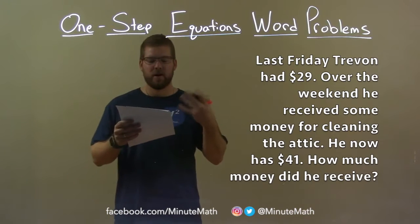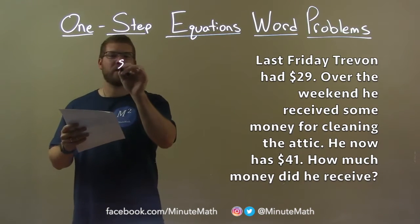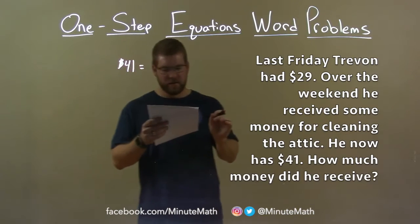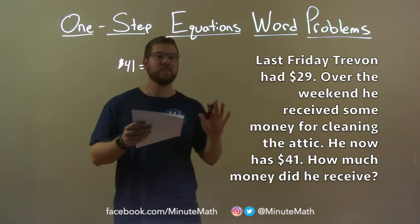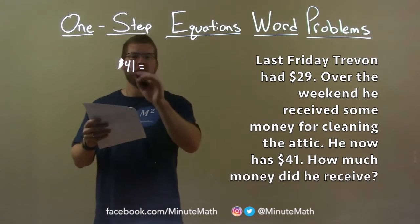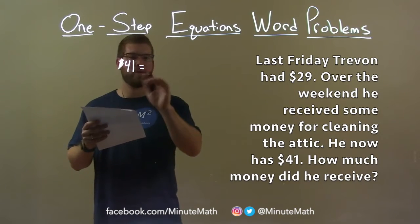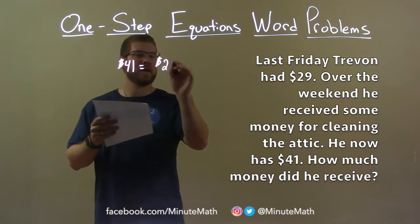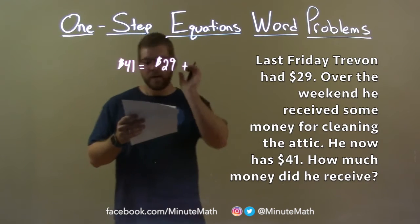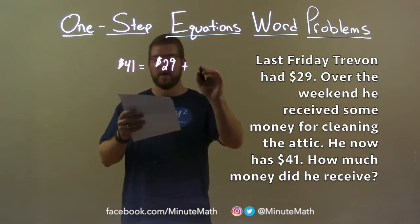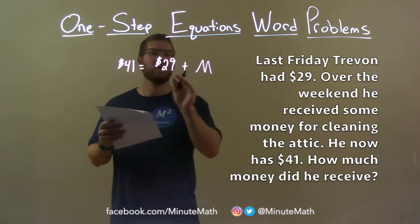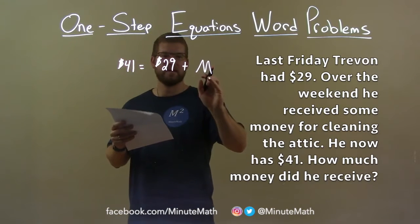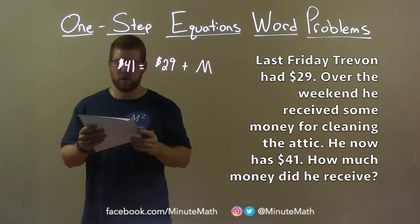That's our key thing — $41. Last Friday he had $29 and he received money over the weekend. So the total of $41 equals his initial $29 plus the amount of money M he received over the weekend.